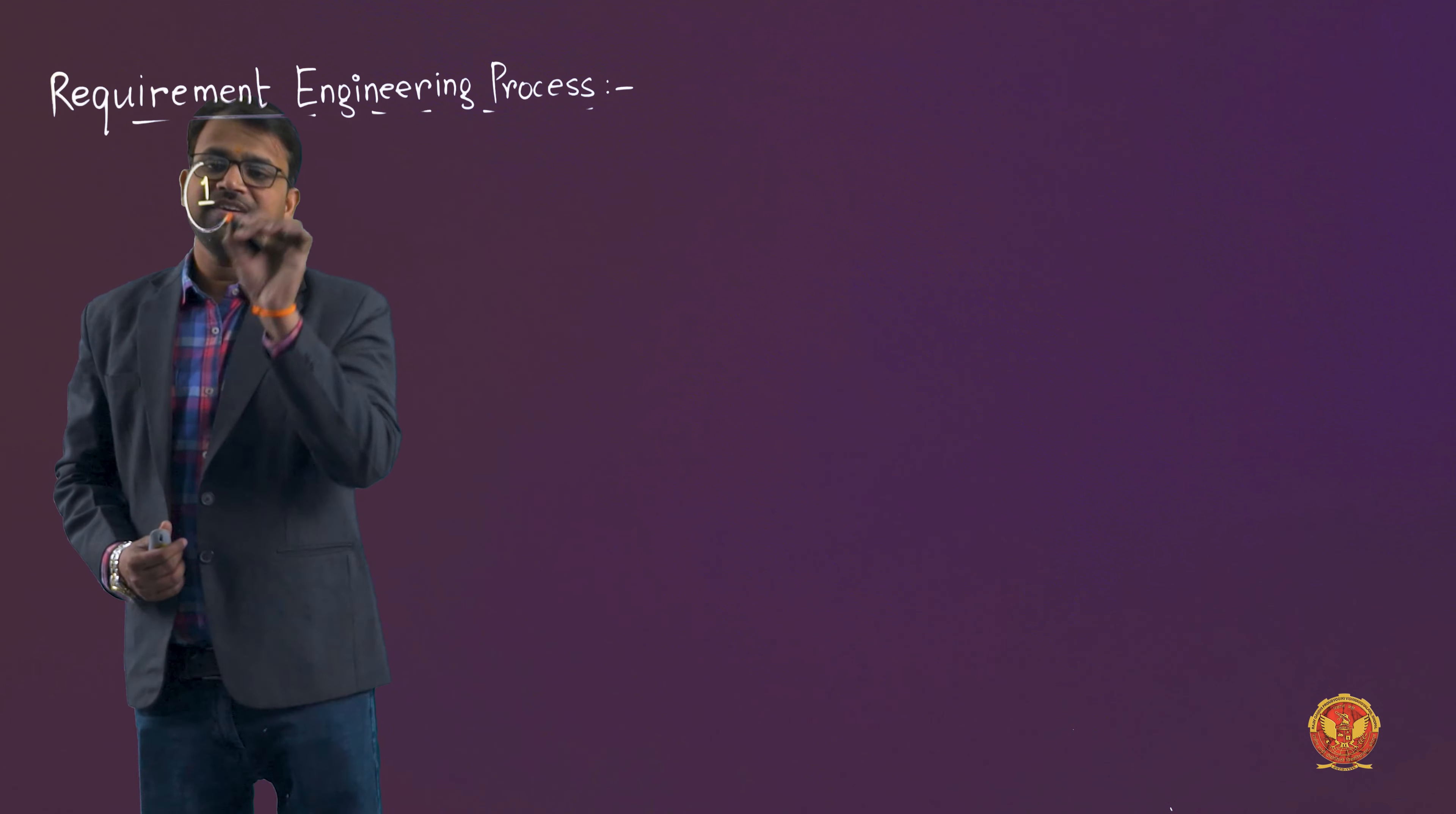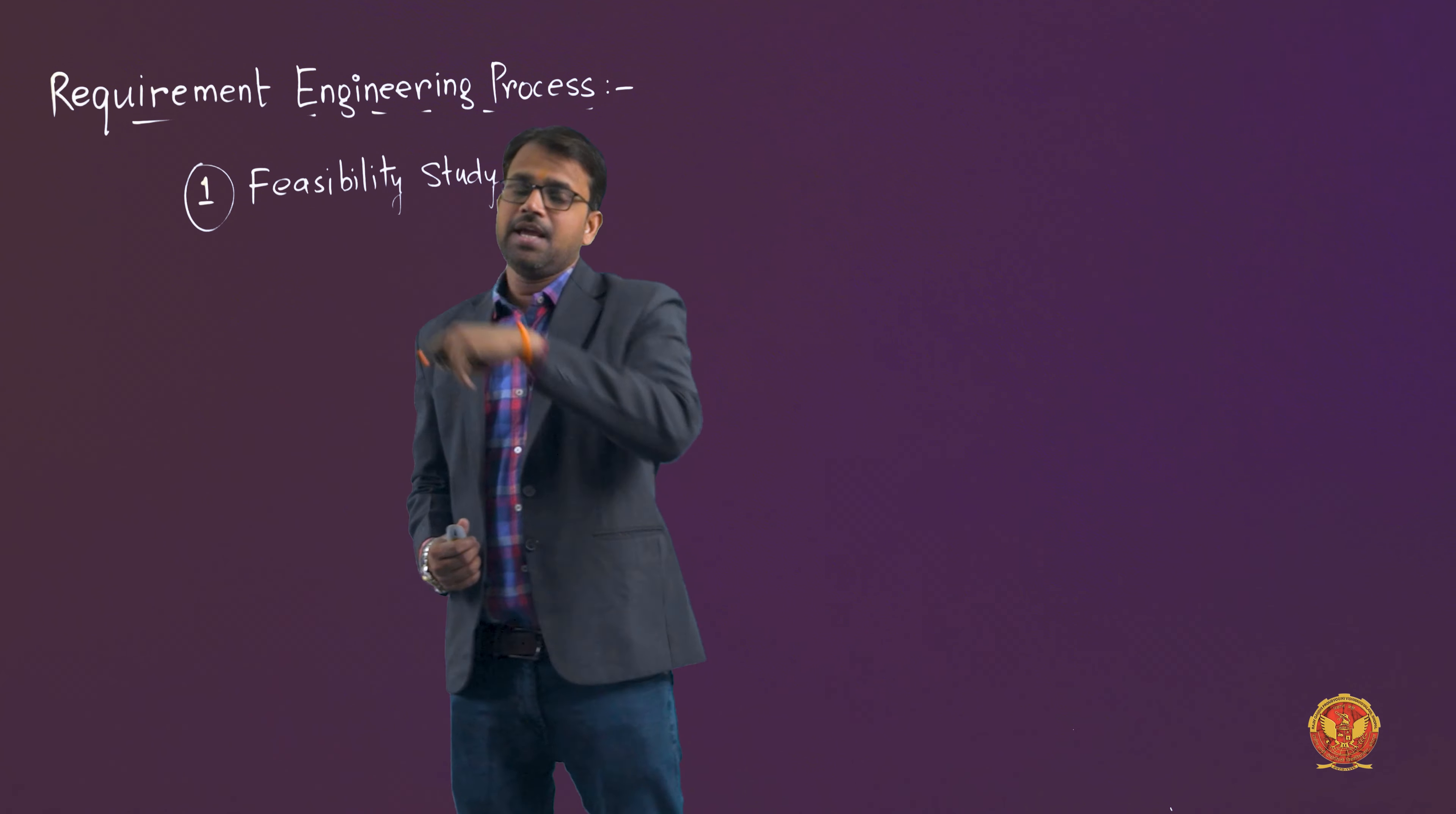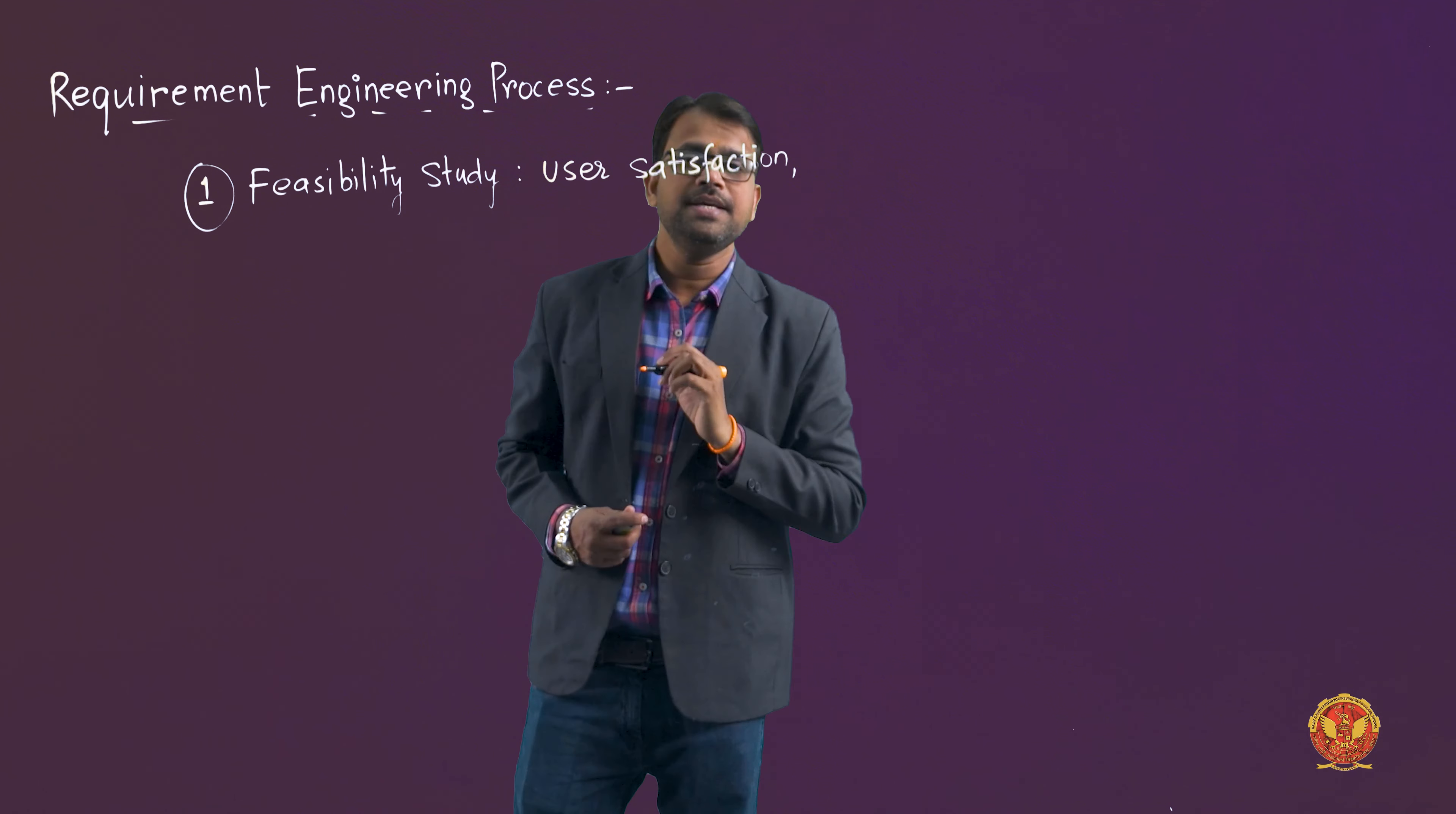The first phase is feasibility study. Feasibility means checking whether we should do it or not, is it feasible to do or not. We say yes when we are capable for a particular project. So capability set ke basis pe we decide whether we can do the particular project or not. In feasibility study we check how practical it is. There are two activities in this: user satisfaction and cost estimation.